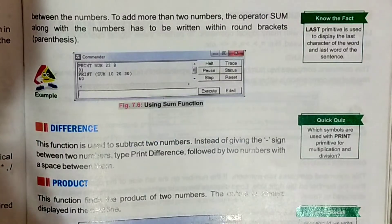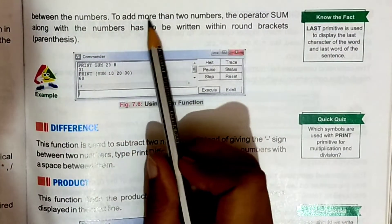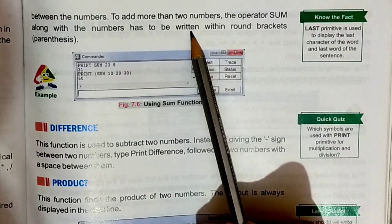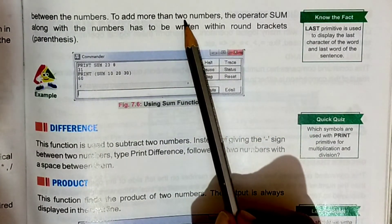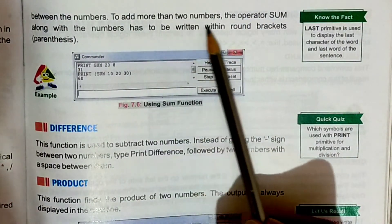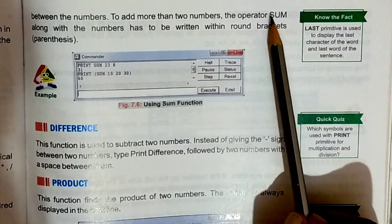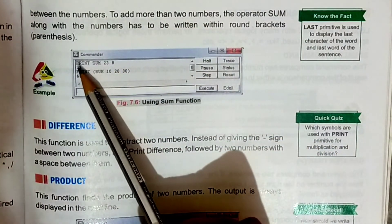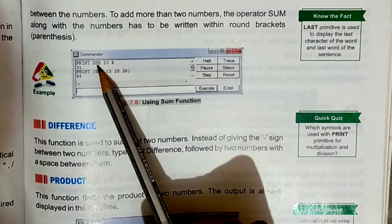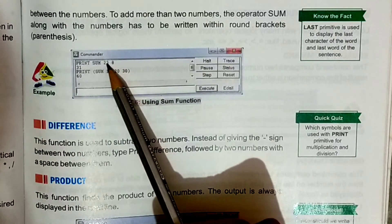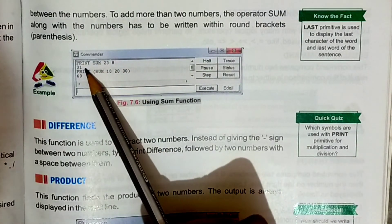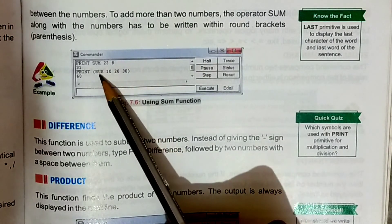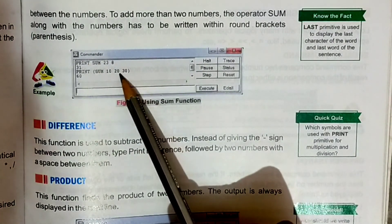A space should be given between the numbers. To add more than two numbers, the operator Sum along with the numbers has to be written within round brackets. For example, print Sum 23 and 8 gives output 31. If you want to add more than two numbers, give the Print command, use round brackets with Sum and the numbers inside, and the output will be displayed — for example, the output comes as 60.